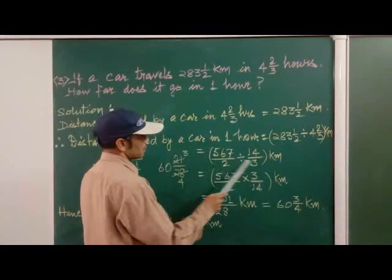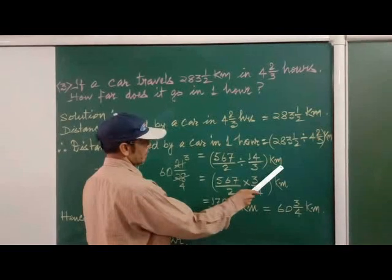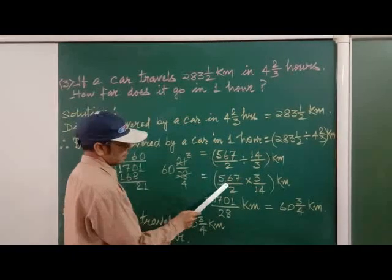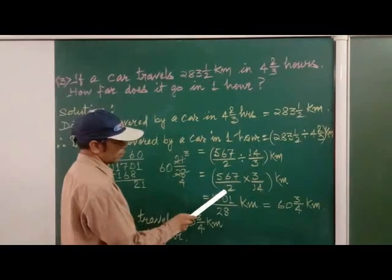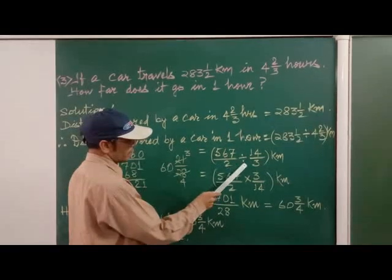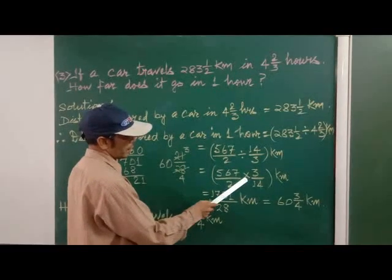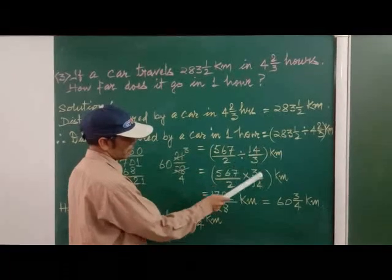In a bracket, you see, we have to write kilometer here. Then again, 567/2. Now this divide will change into multiply. So multiply and 3 will go up and 14 will come down.